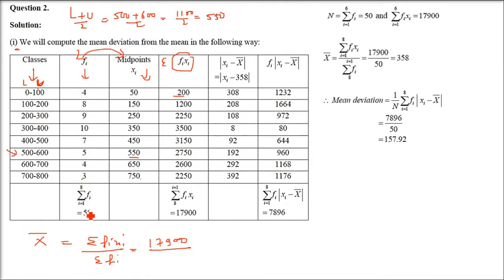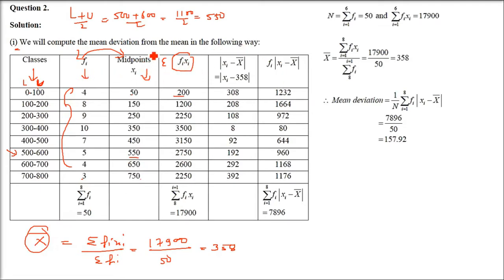With mean X̄ = 358, now subtract 358 from each midpoint Xi to get |Xi − X̄|, taking the positive (absolute) value. For example, |50 − 358| = 308 and |750 − 358| = 392. This gives the Di column for all 8 terms.